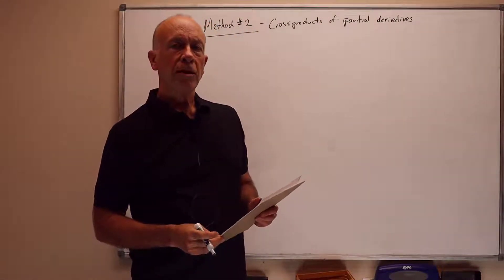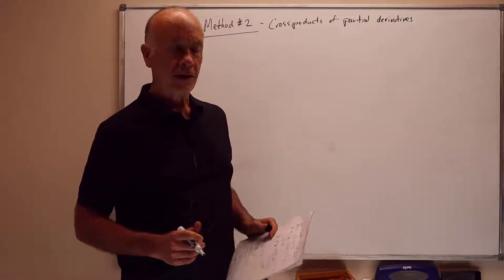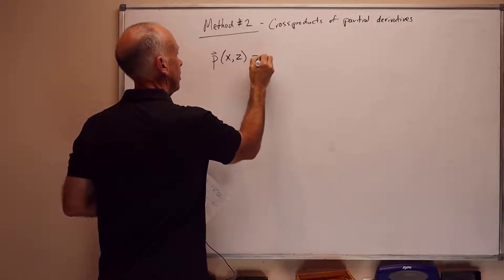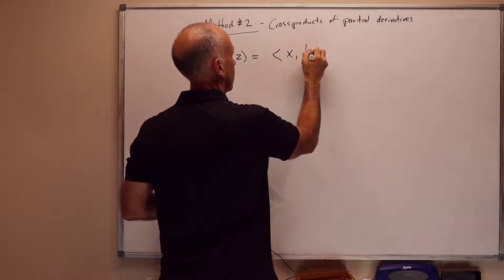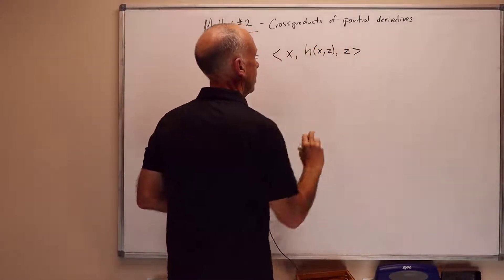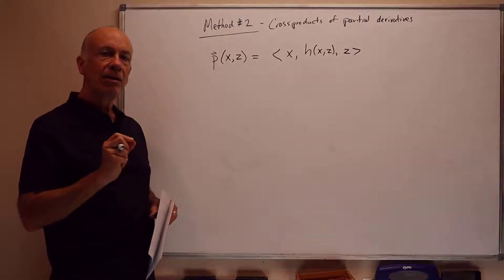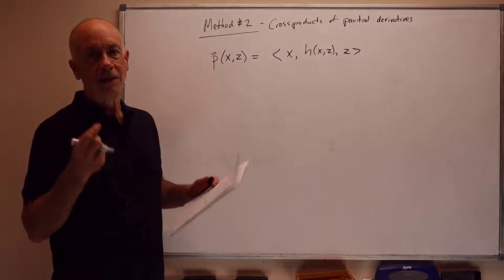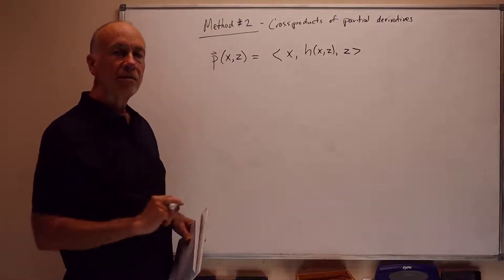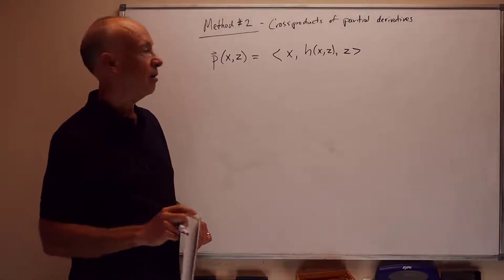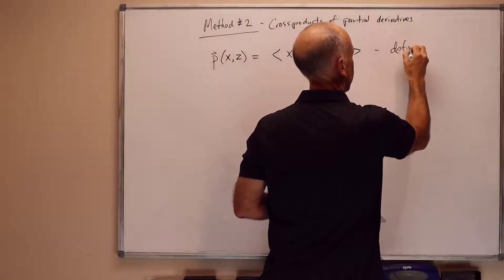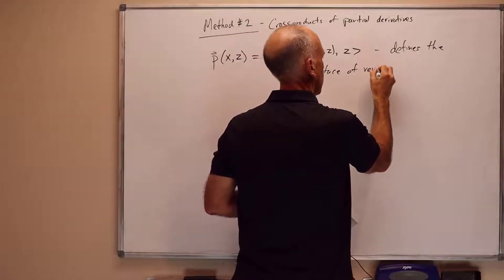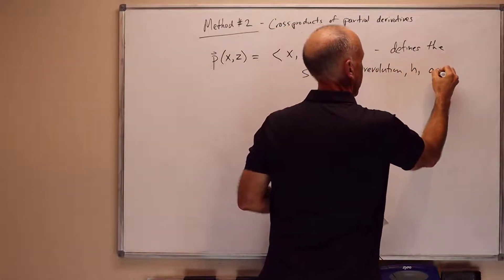For the second method, we work with cross products of partial derivatives of a vector-valued function. We define p(x,z) to be the vector (x, h(x,z), z). So for any scalar values x and z, p(x,z) is a point in 3-space where the height is h(x,z) — that's the y value — above the point (x,z) in the xz-plane. This does define the surface of revolution, tracing it out as x and z vary.